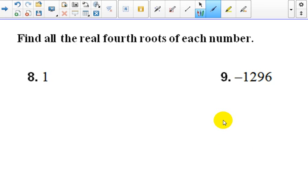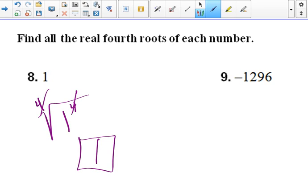8 and 9 says find all the real fourth roots of each number. Well, it doesn't matter what root when you're dealing with 1. It doesn't matter what the index is. It's always just going to be a 1. Because 1 times 1 times 1 times 1 is 4. So 1 to the fourth power is 1. So when they cancel out, you get a 1.